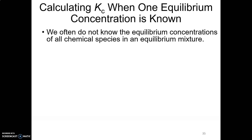Now we're picking up with our third video. We just did some examples, now let's keep going forward. We talked about what happens if we know every equilibrium concentration — it's just a plug and chug into the K expression. We also talked about what happens if we know all but one equilibrium concentration. If you know all but one, you also need to know K, so it was still only one unknown.